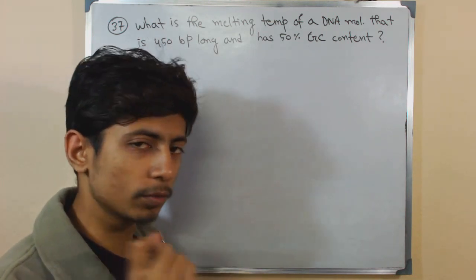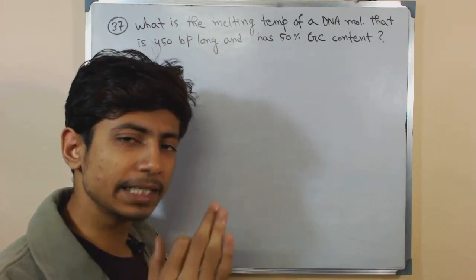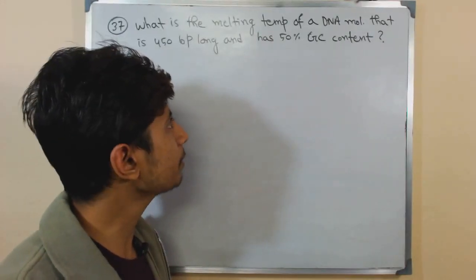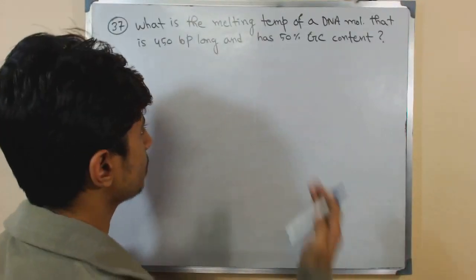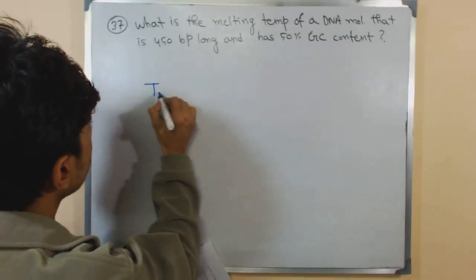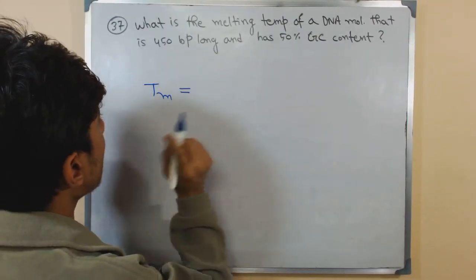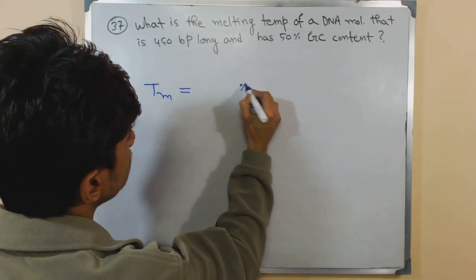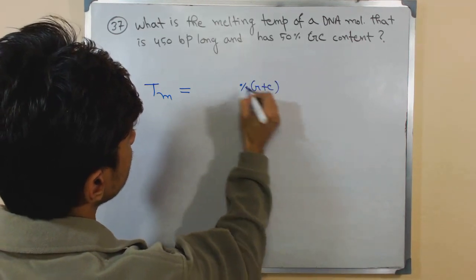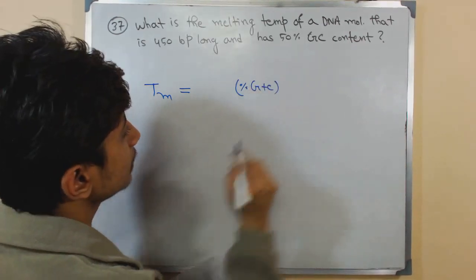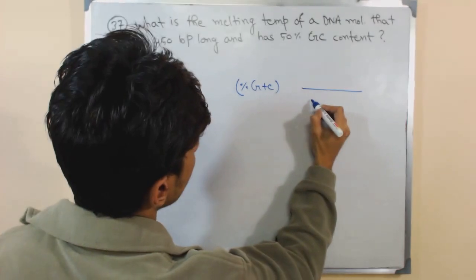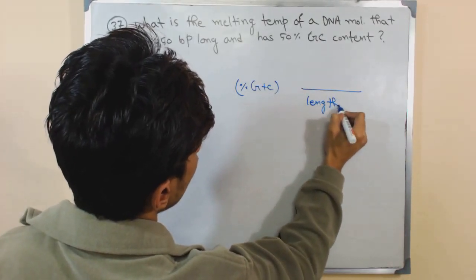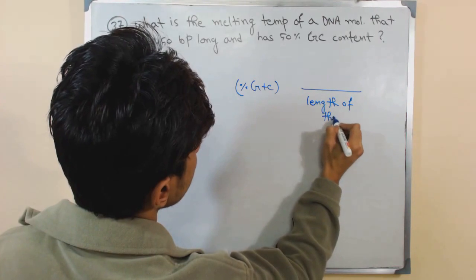Let's think about the formula which is built with three important parameters. Let me write those parameters: one is the melting temperature, that is TM, another is the percentage GC content, and another is the length of the bases.